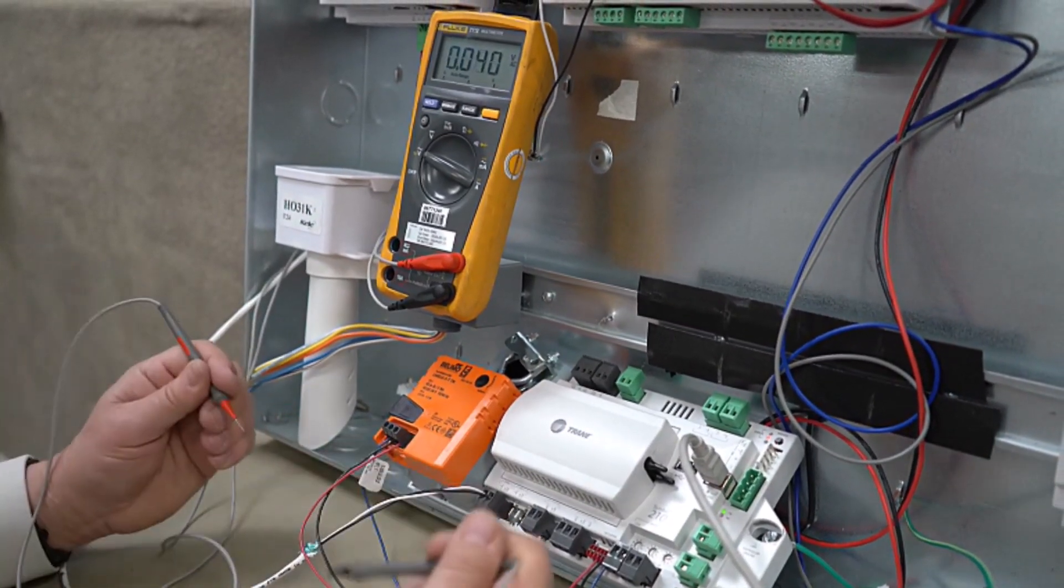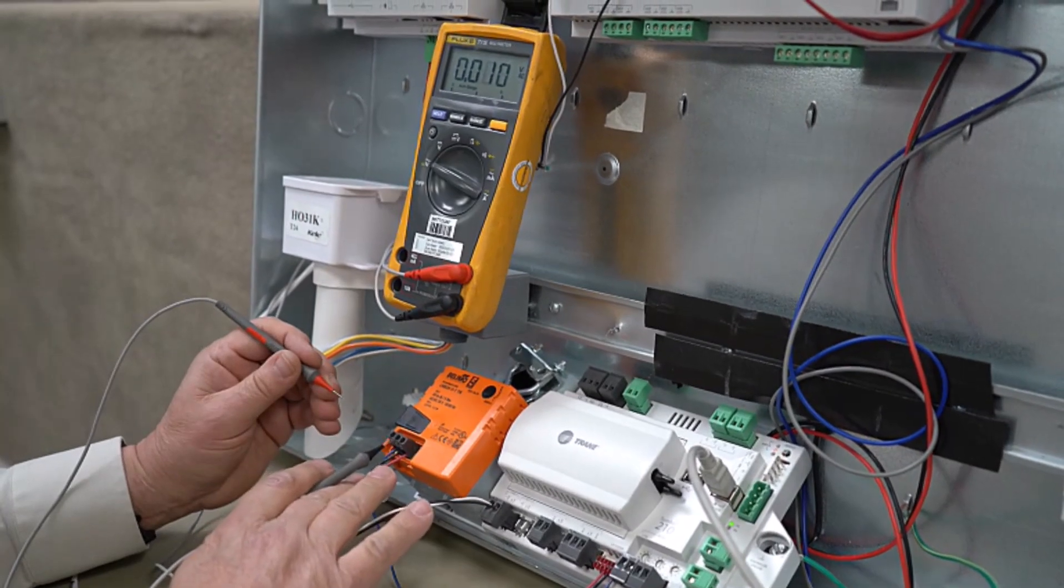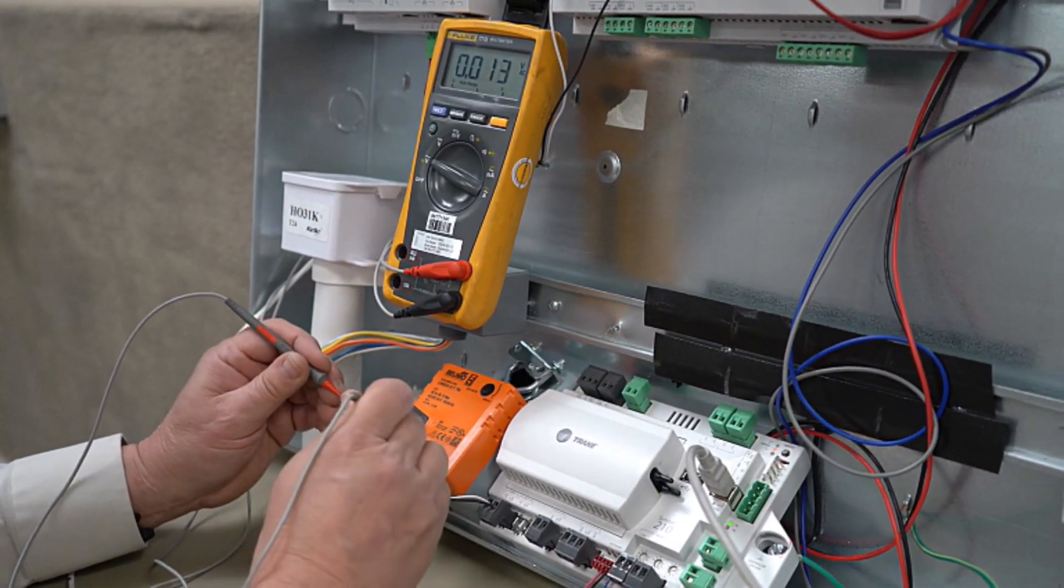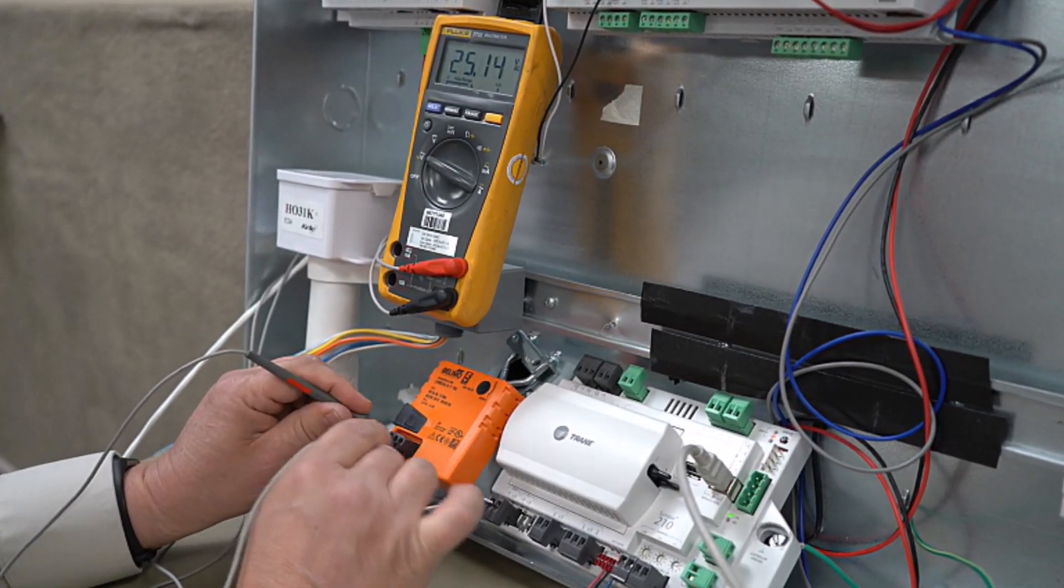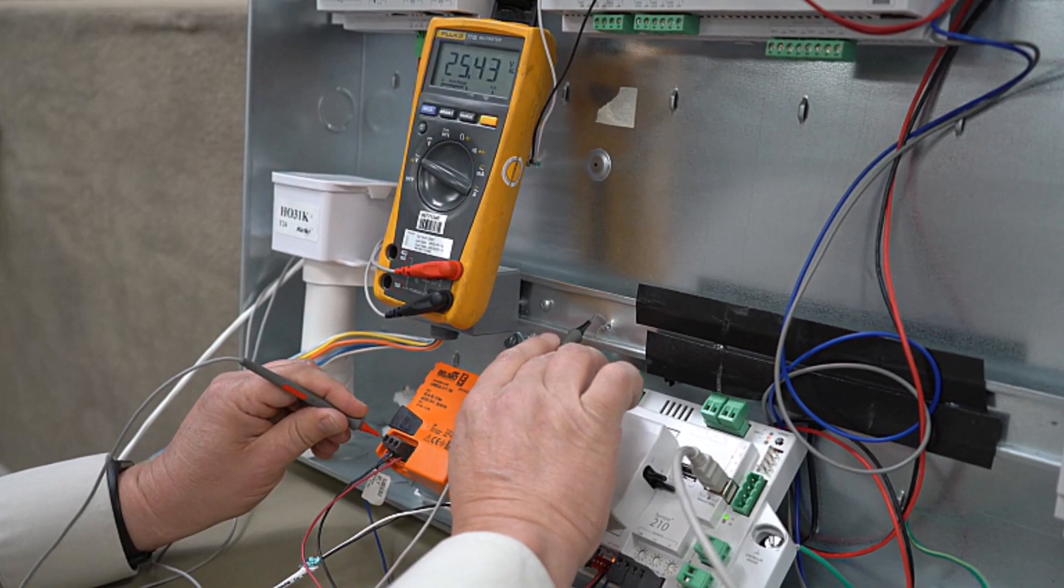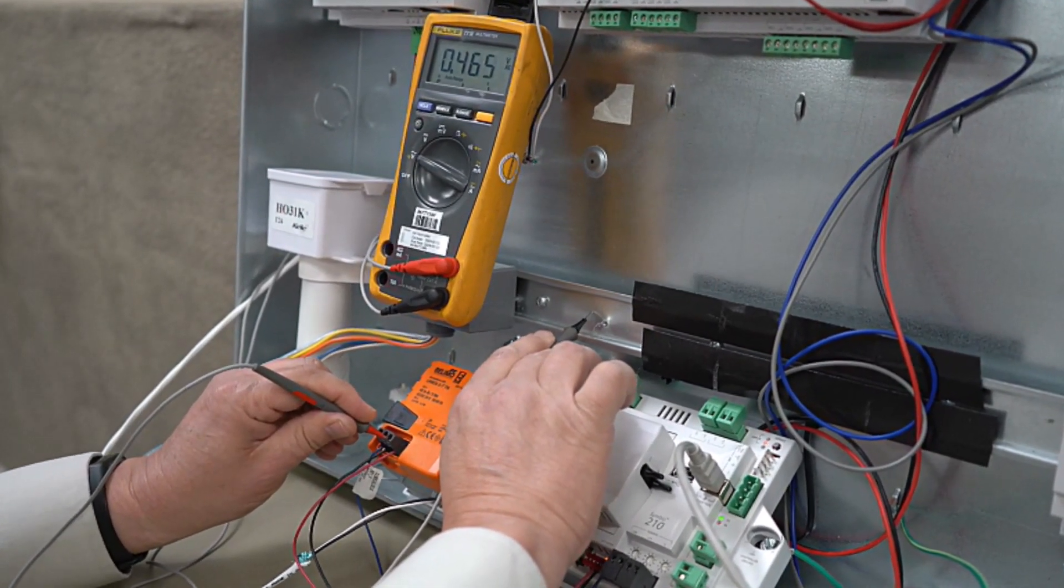When we reverse directions and we drive it the other direction, then that common is going to change from the black wire to this red wire. So off of here, we still have that 25 volts from the blue to the red. Blue is still our hot leg at 25 volts and that red wire has now become our common as the actuator drives in the other direction.